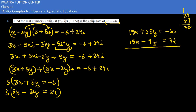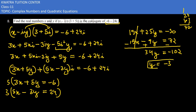Now 15x and 15x cancel out. So 25y plus 9y gives 34y, and minus 30 minus 72 gives minus 102. Therefore y equals minus 102 divided by 34, which gives y equals minus 3.